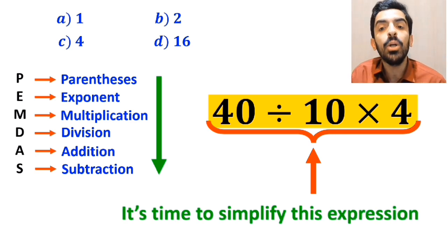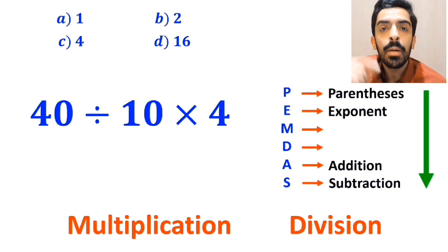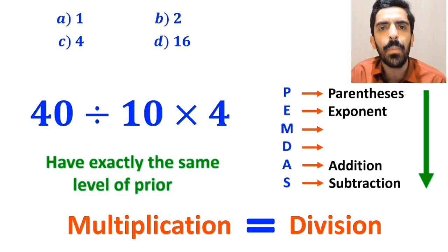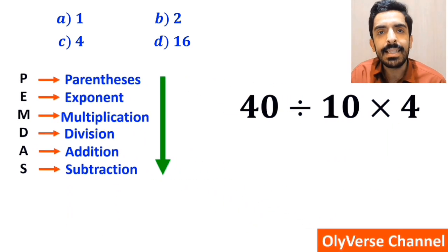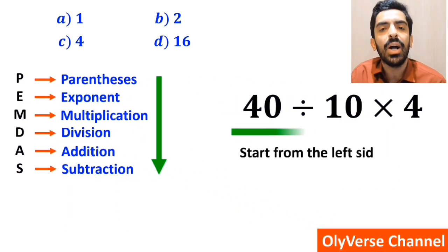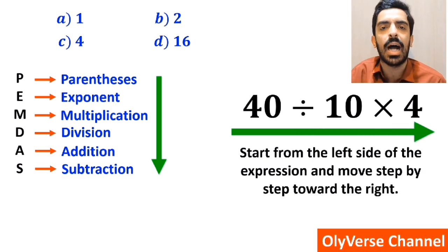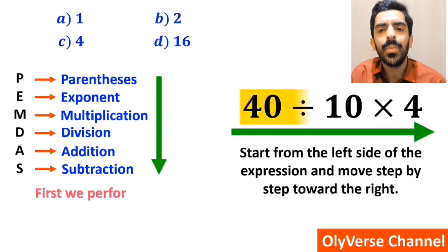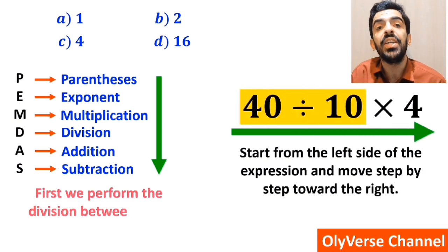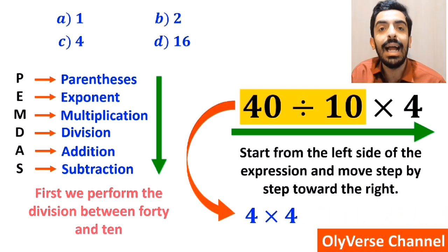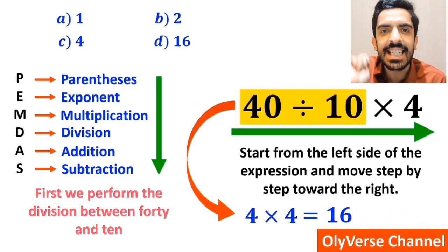It's very important to note that in PEMDAS, multiplication and division have exactly the same level of priority. In this case, we start from the left side of the expression and move step by step toward the right. So first we perform the division between 40 and 10, simplifying to 4 multiplied by 4. Finally, the value of this expression is 16.